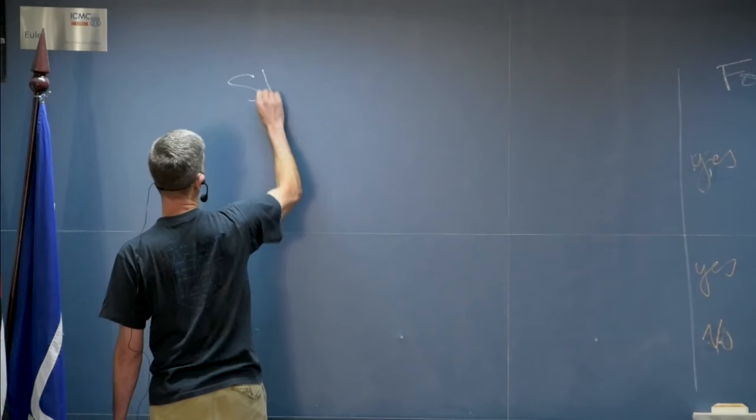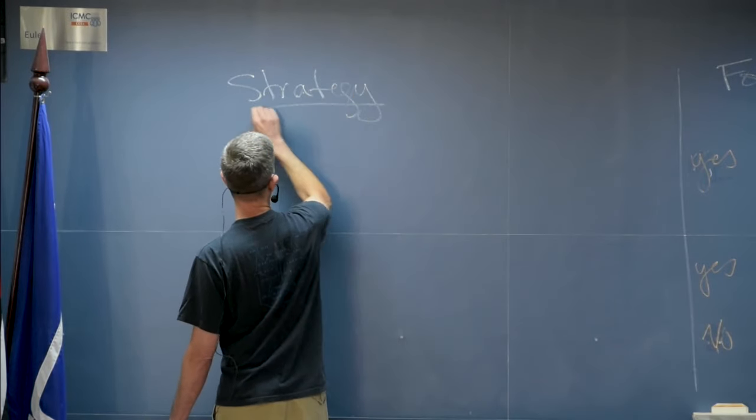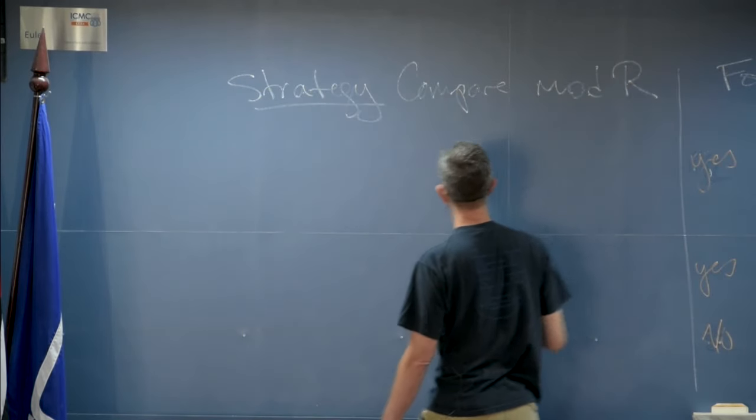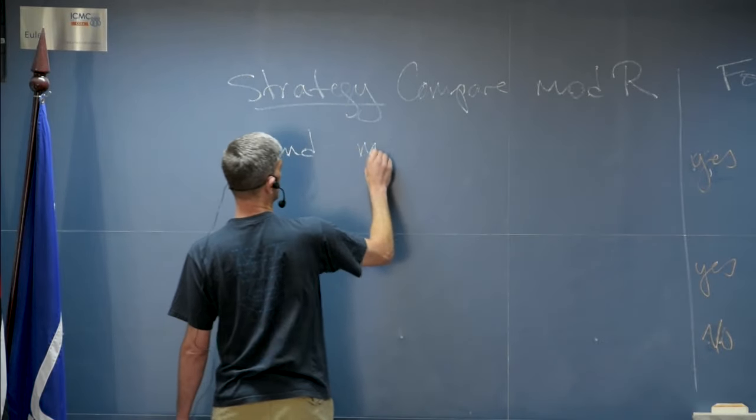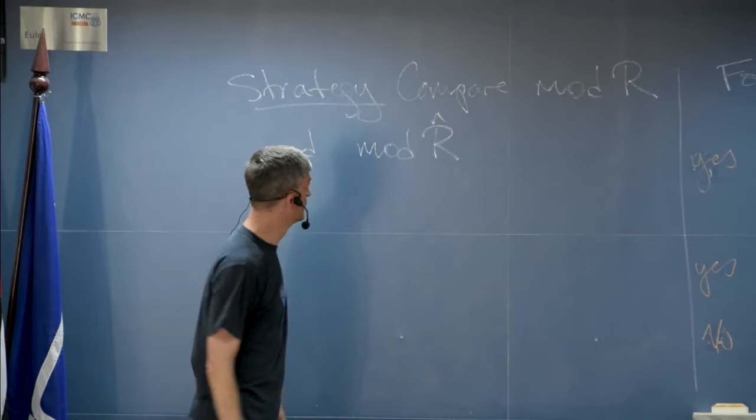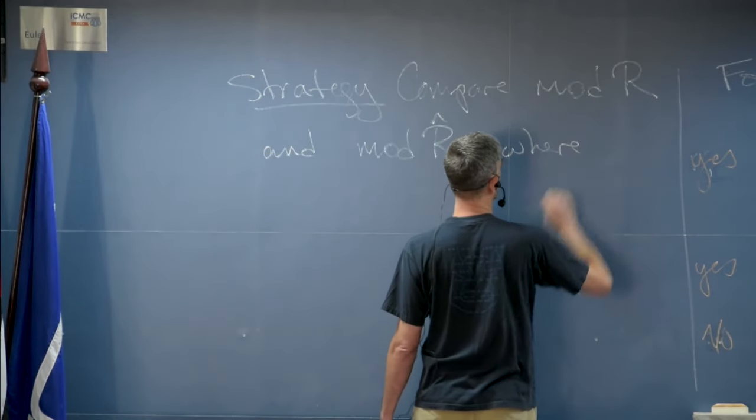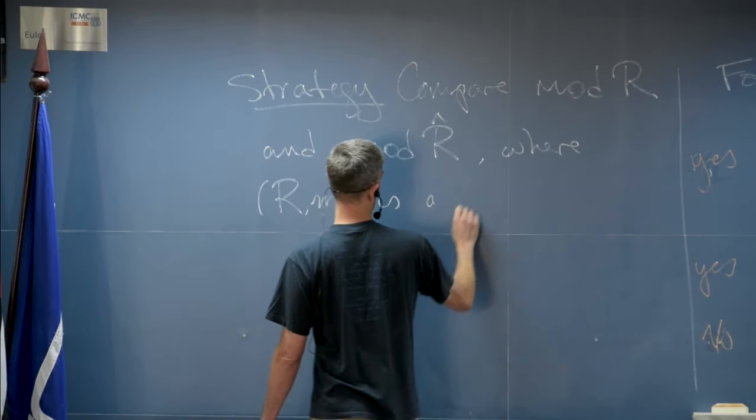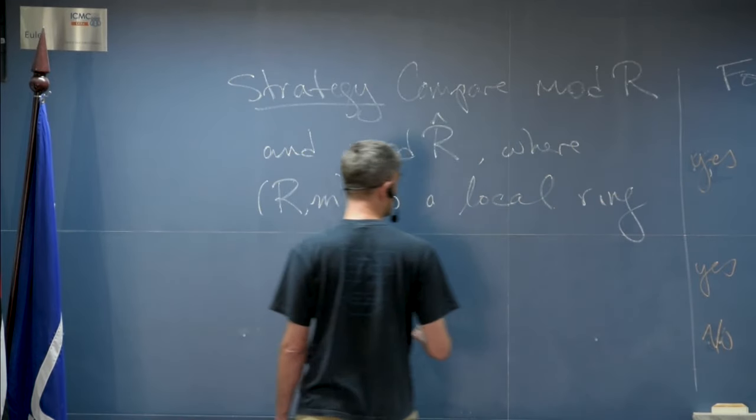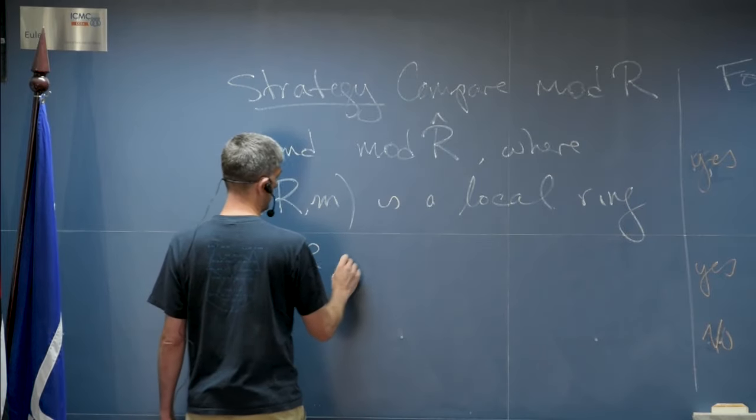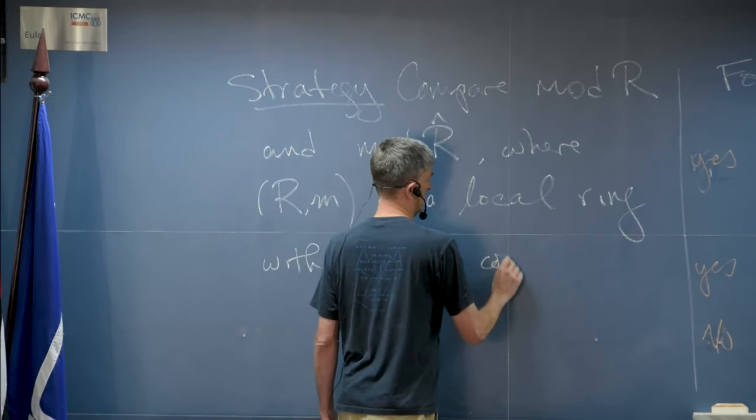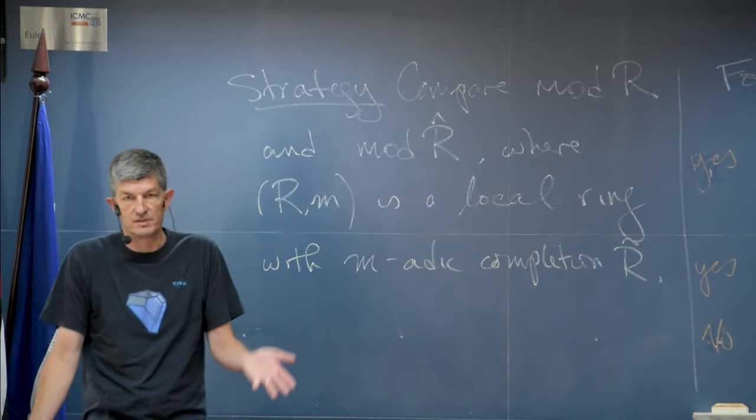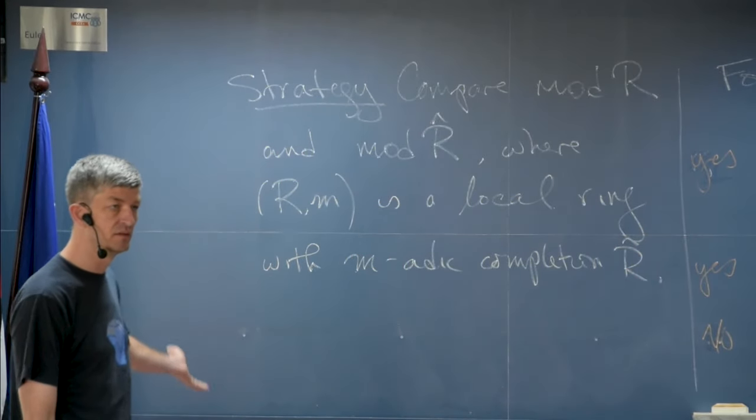So our strategy for this is to compare mod R and mod R hat where, to set the notation for the rest of the lecture, R,m is a local ring and Noetherian always, with m-adic completion R hat. This is an obvious thing to do since we understand the module theory over the complete local ring.